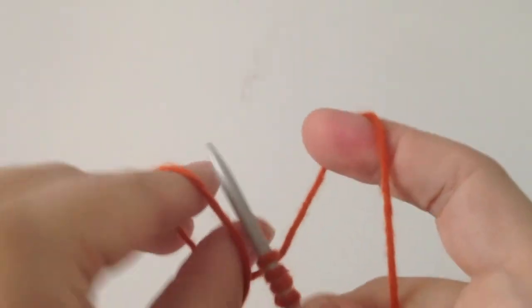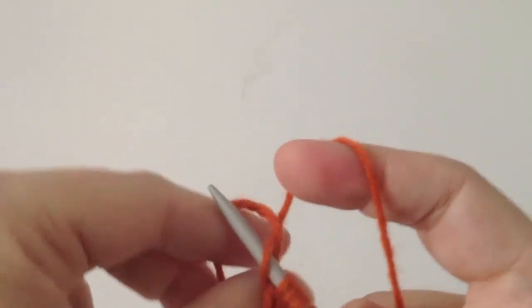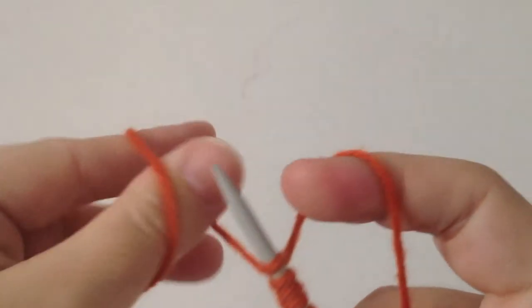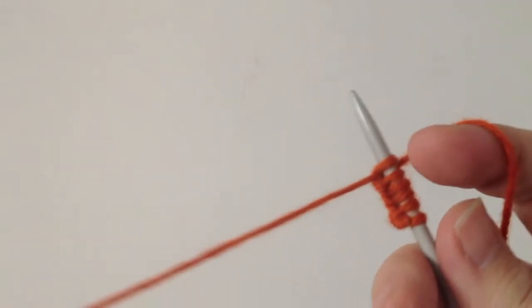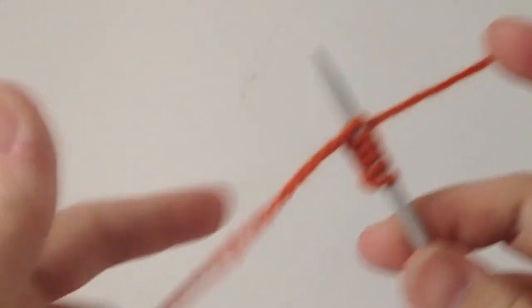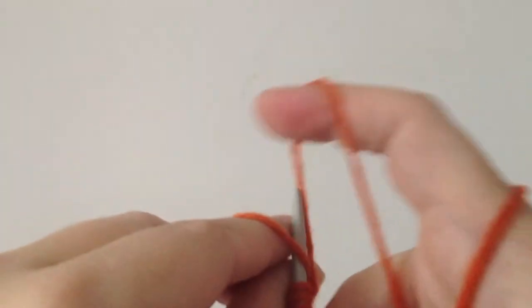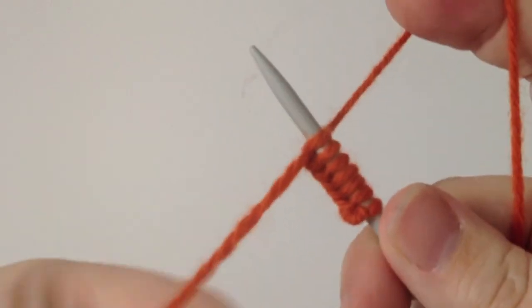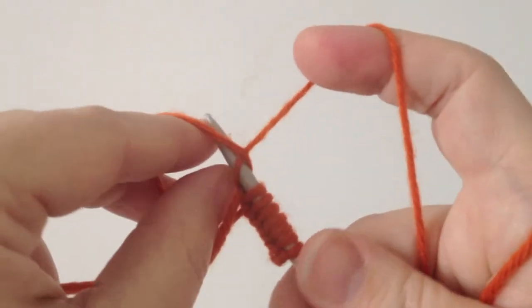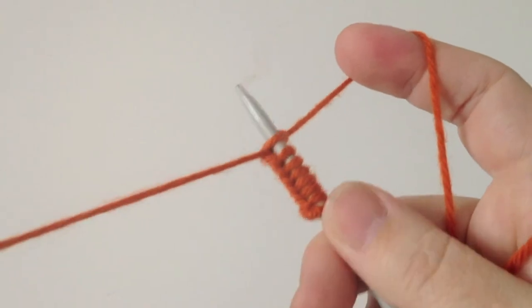Now you can see how very easy this is to create these stitches to cast on. I really like this method. It's very rhythmic. You can do it while watching TV and probably even while you're reading a book.